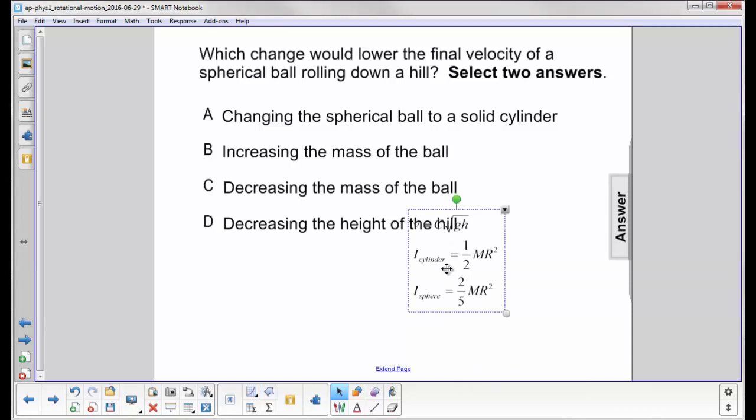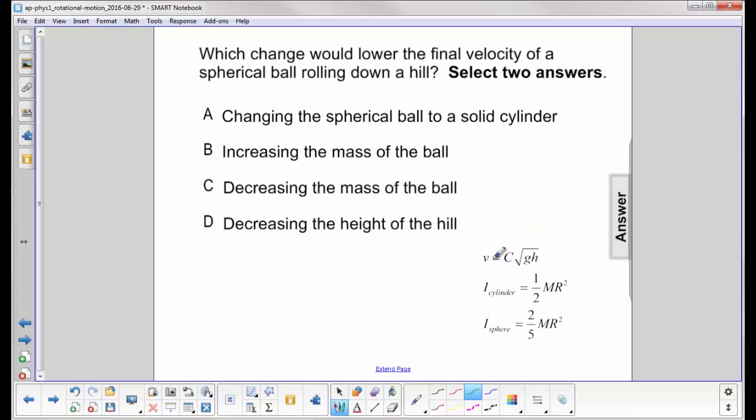So let's look at what we have here. When we were working these problems we found out that the velocity of an object as it rolled down a hill was always some constant, some number, times the square root of gh. So the mass is not involved at all here.